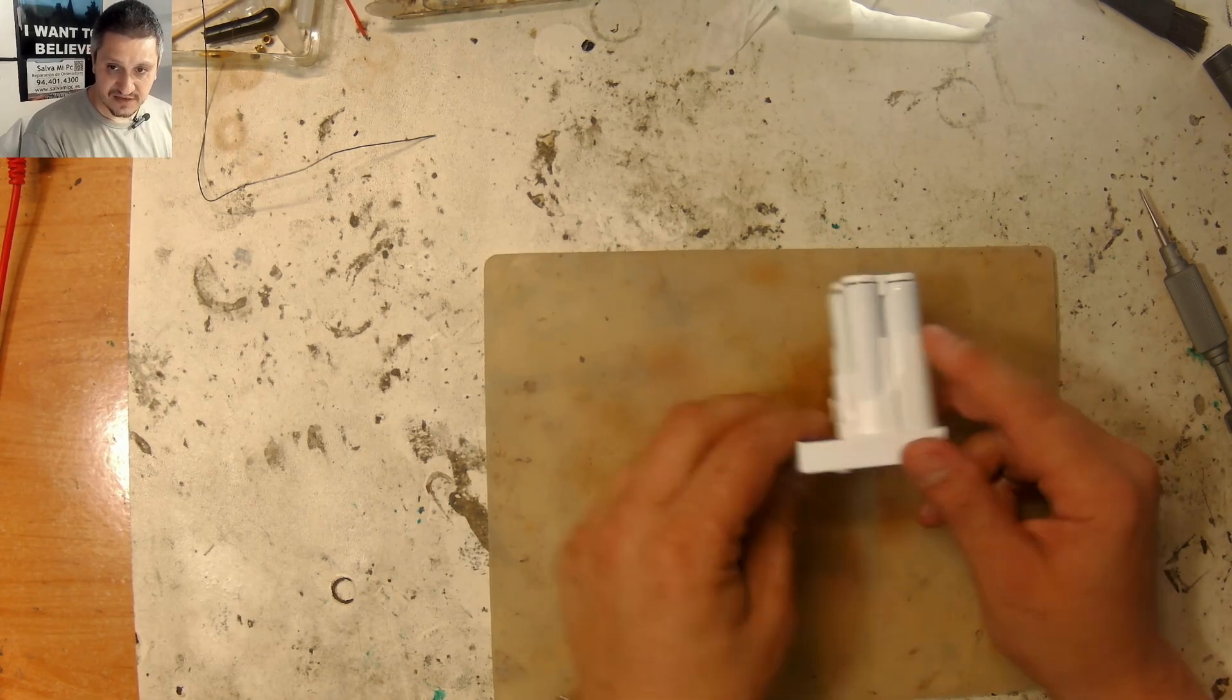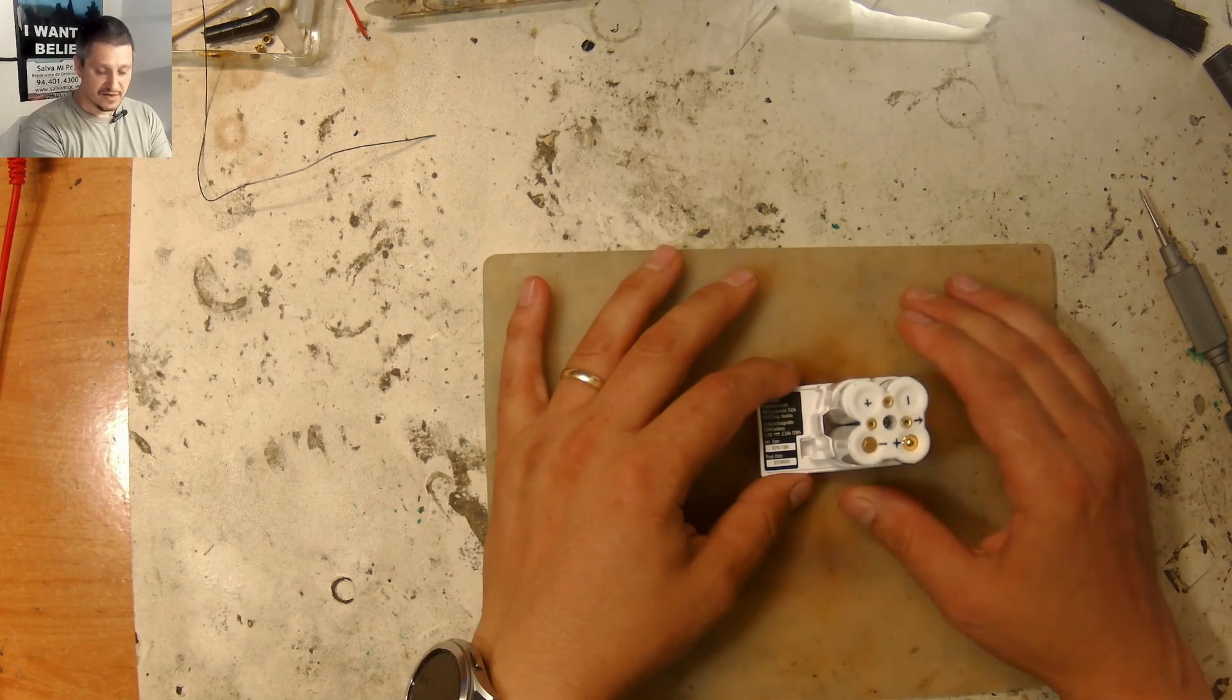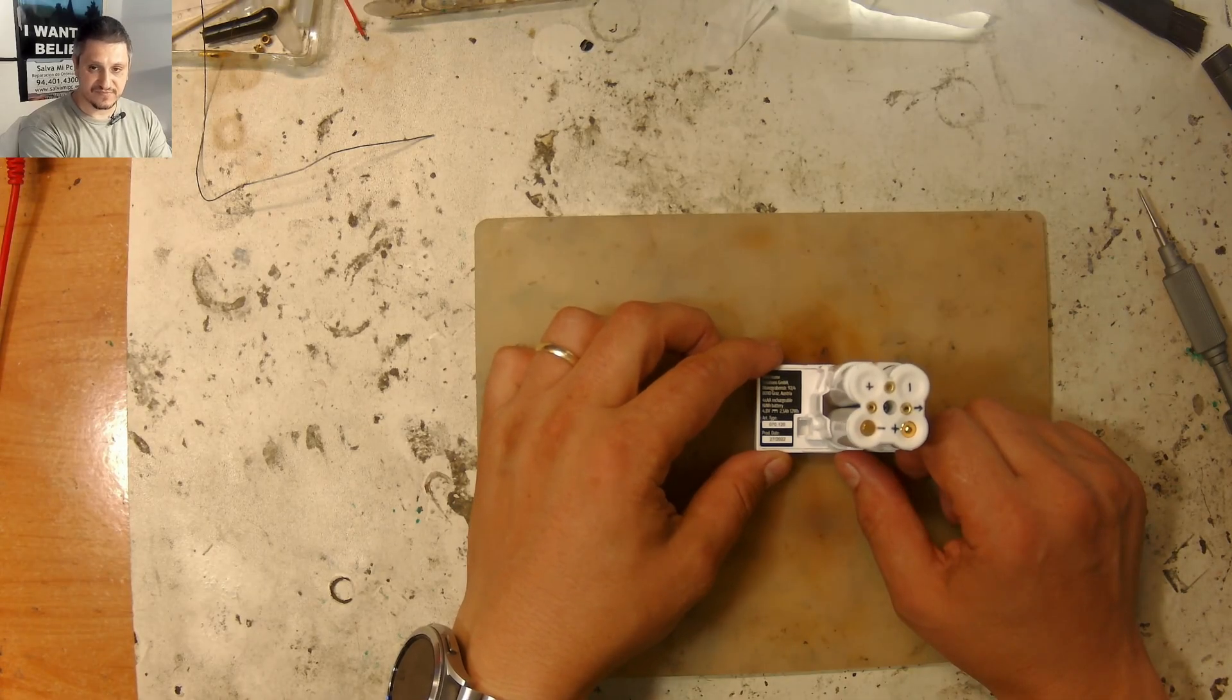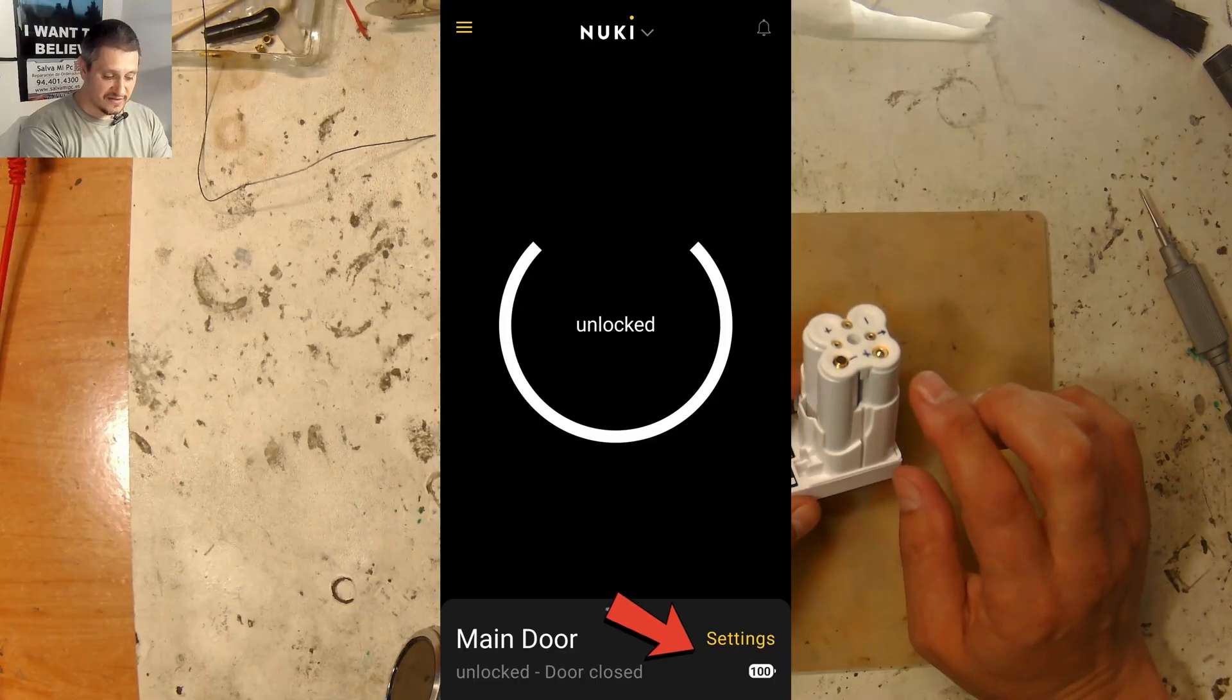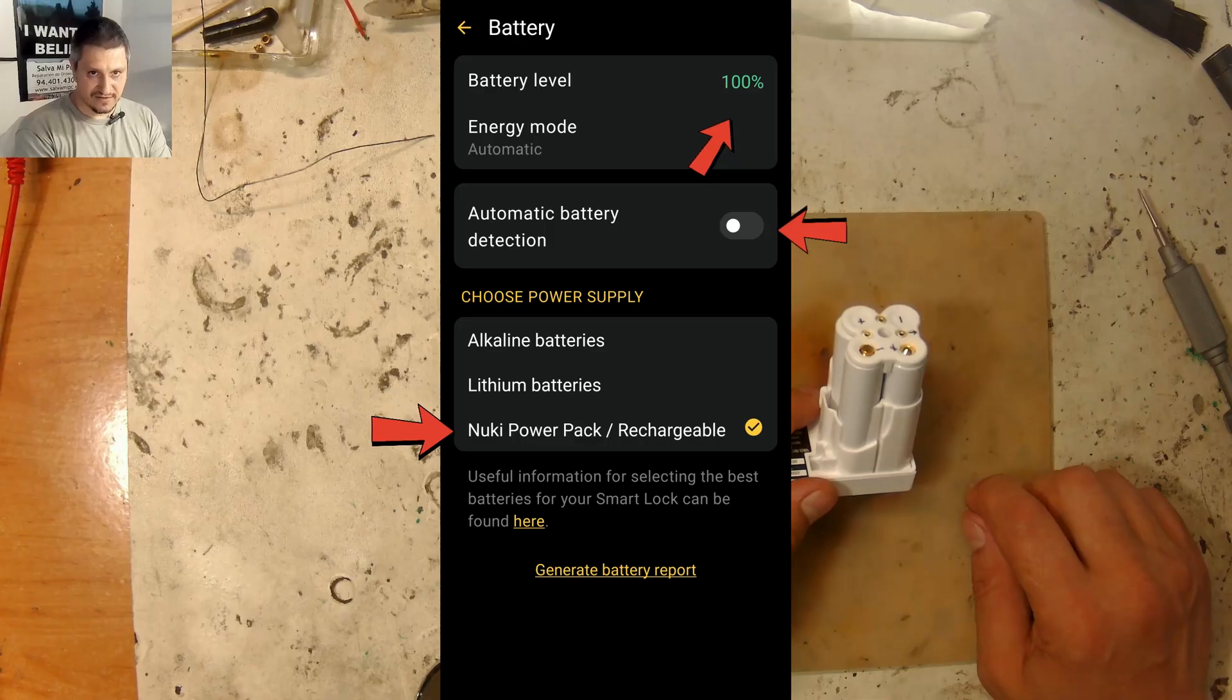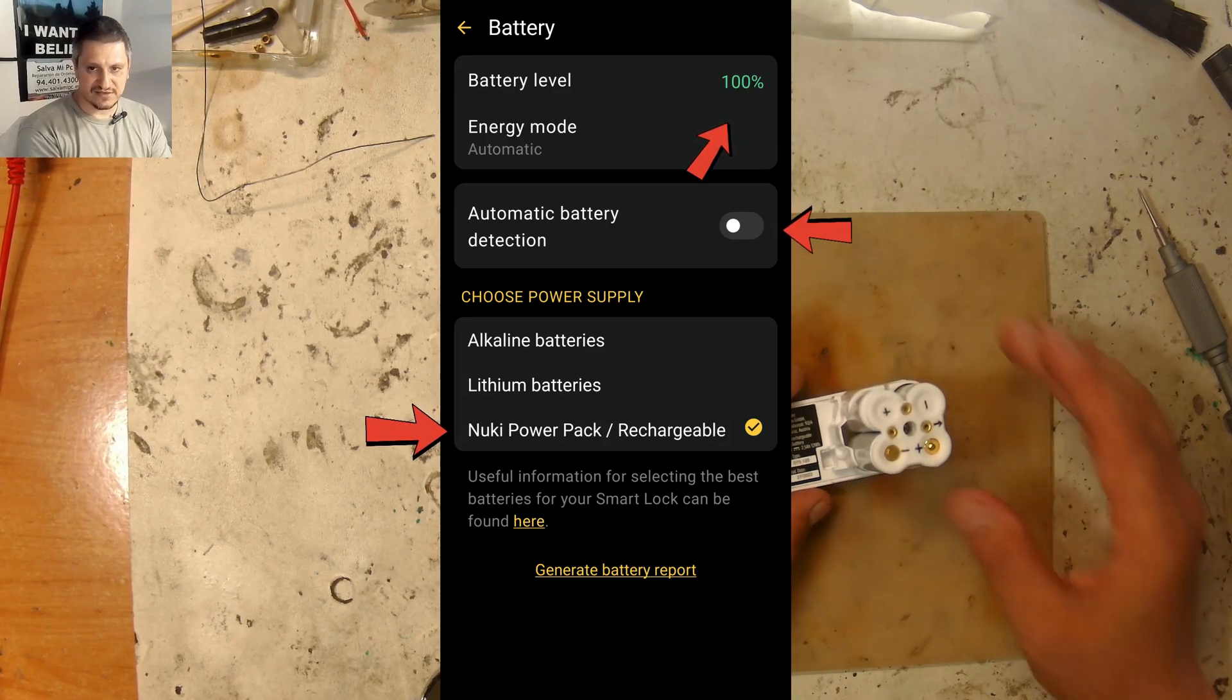All is left now is to plug it back into the Nuki lock and see if it works. I'll leave in the description a link of the batteries that I recommend to use for this. And let's plug it in and see what happens. One other thing you have to make sure that when you configure the batteries into the setting of the Nuki, you select the Nuki power adapter or something like this. Otherwise it's not going to charge properly.